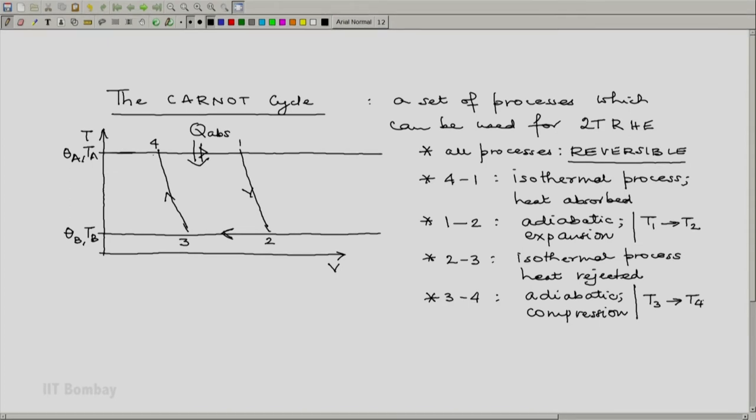So notice that there are two processes 1-2 and 3-4 which are adiabatic. And in the first process 1-2, the temperature of the system drops from T1 which equals T4 which equals T_A to T2 which equals T3 which equals T_B. And in the second process the temperature rises from T3 to T4. So there are just two temperature levels and two adiabatic processes, one in which temperature drops from the higher level to the lower level and one in which temperature rises from the lower level to the higher level.